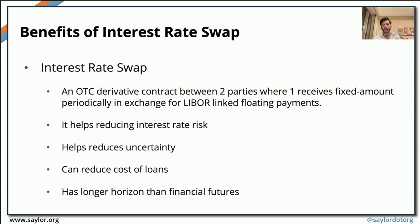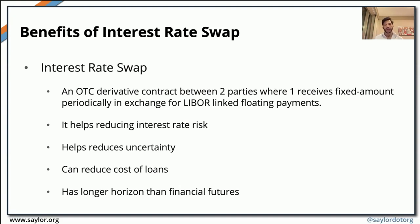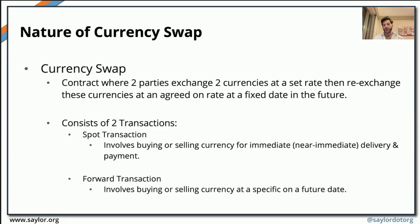If we want to look at interest rate swaps and examine some of their benefits, we need to look at what they mean. Interest rate swaps are instruments that are normally over-the-counter derivatives, and these derivative contracts are between two different parties. One party receives a fixed amount on a periodical basis, and the other party provides LIBOR-linked floating payments. Interest rate swaps help in reducing interest rate risk and by doing so they also help reduce uncertainty. They can also help reduce the cost of loans. As a result, interest rate swaps have a longer horizon than financial futures.